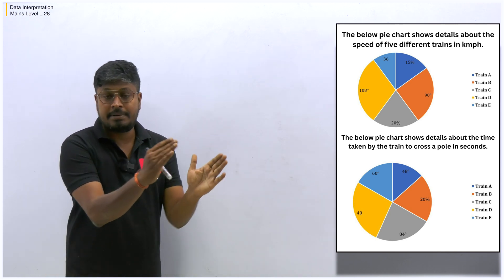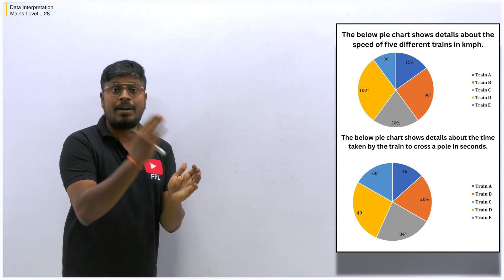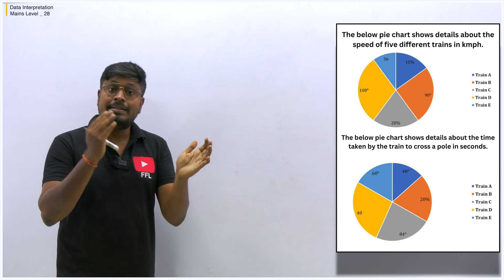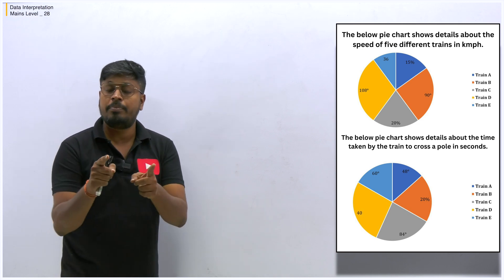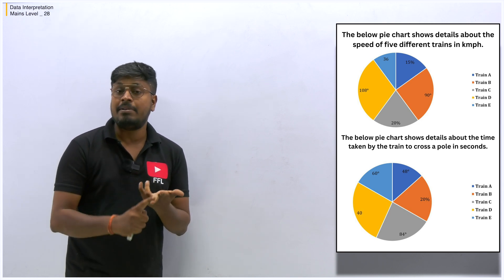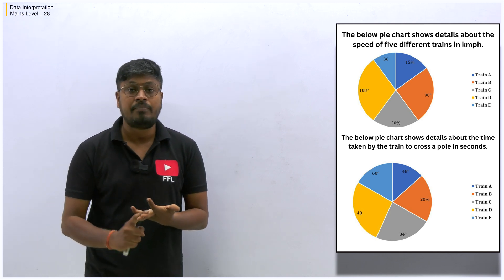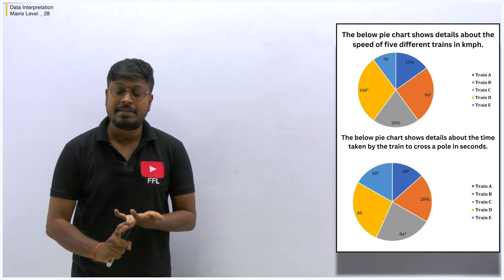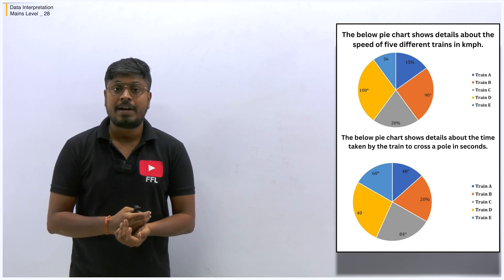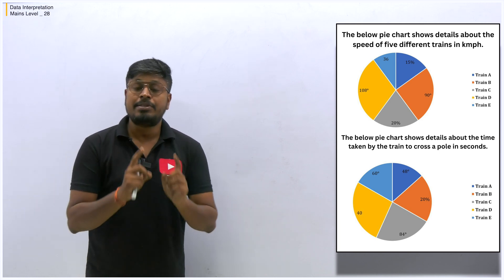I hope you know the major two concepts in time and distance: one is a train crossing a pole, a rock, or a standing man, and the other is a train crossing a bridge or a running man. These concepts are different. Time and distance, time and work, and probability play a major role if you are preparing for IBPS PO mains, SBI PO mains, or IBPS clerk mains.